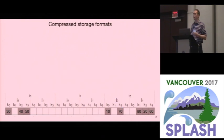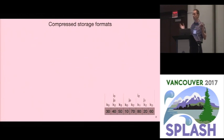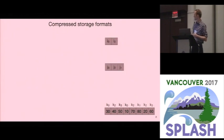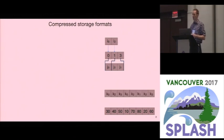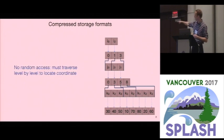For sparse data and compressed formats, the story is very different. If I want to compress this tensor, I remove the zeros and compress the non-zeros right next to each other. The indices don't form a complete tree anymore, so I have to store them explicitly. I store the i's, the j's, and for each i which j's correspond to it. Then I do the same for the k's, and I get the corresponding values. Traversing through this data structure is much more complicated than computing a strided formula.